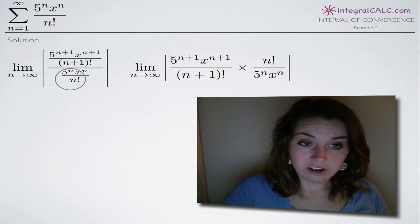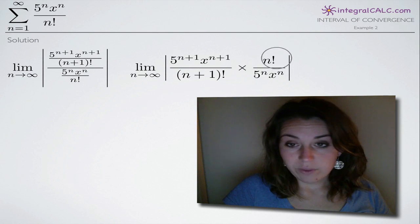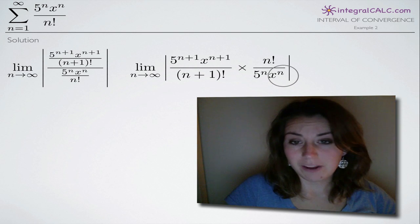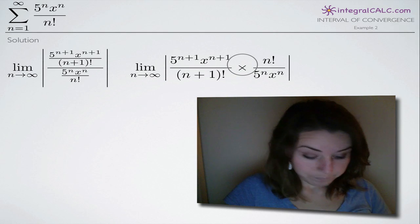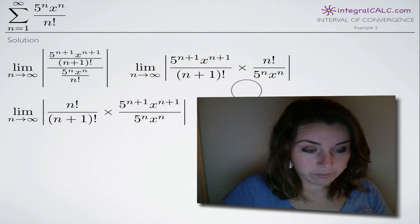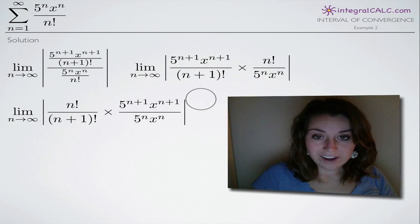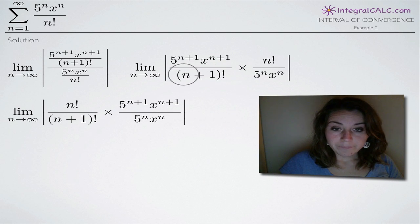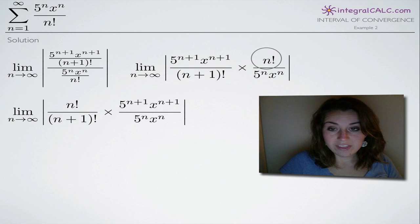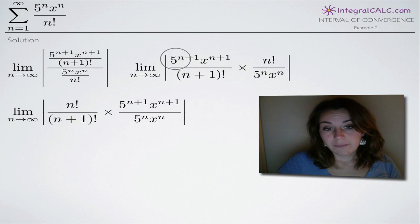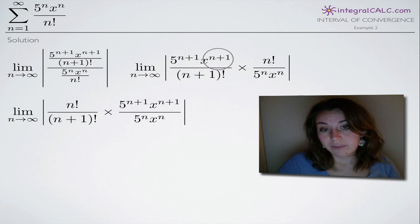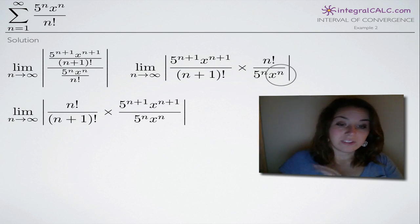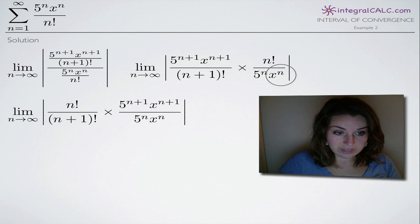We flip this fraction on its head and we have n factorial in the numerator and 5 to the n times x to the n in the denominator, and we're multiplying instead of dividing. Next, I'm going to rearrange these fractions — since everything's multiplied together I can do that — putting n plus 1 factorial and n factorial together, and then 5 to the n plus 1 times x to the n plus 1 divided by 5 to the n times x to the n together, because it will make simplification easier.